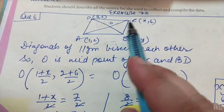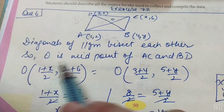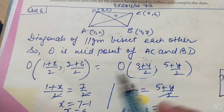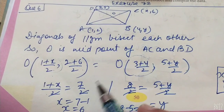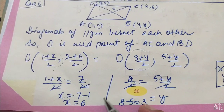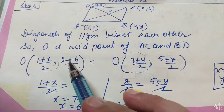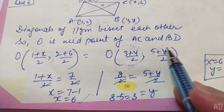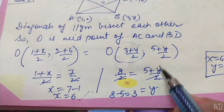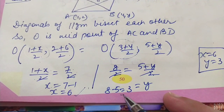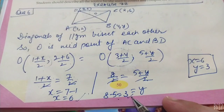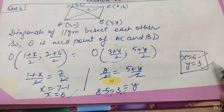अब O का पता है, तो दोनों का ही midpoint है, तो मैं इसके coordinates को इसके coordinates से compare कर सकती हूँ — X को X से और Y को Y से. यानि (1 + X)/2 = (3 + 4)/2 = 7/2, 2 से 2 cancel, X = 6. Similarly, (2 + 6)/2 = (5 + Y)/2, 8/2 = (5 + Y)/2, 2 से 2 cancel, Y = 3. तो answer है X = 6 and Y = 3.